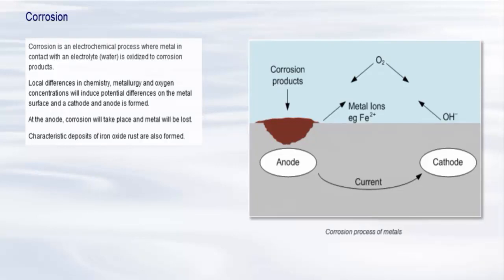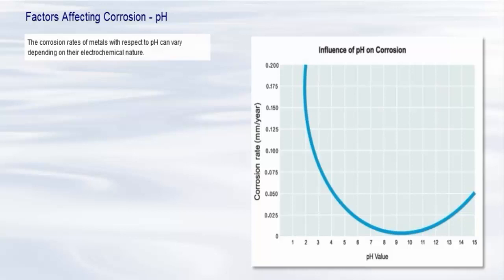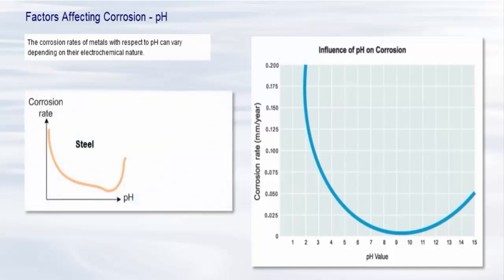There are a number of factors that can affect corrosion in the engine cooling system. As previously discussed, the corrosion rates of metals with respect to pH can vary depending on their electrochemical nature. For example, the corrosion rate of steel is greatly increased in acid conditions as they prevent the formation of a protective oxide layer. The corrosion rate of mild steel reduces as pH rises up to around pH 13 because of the reducing solubility of iron oxide in this range. Copper behaves in a similar manner. Aluminium and zinc, because of their amphoteric nature, exhibit increased corrosion rates at extremes of pH.